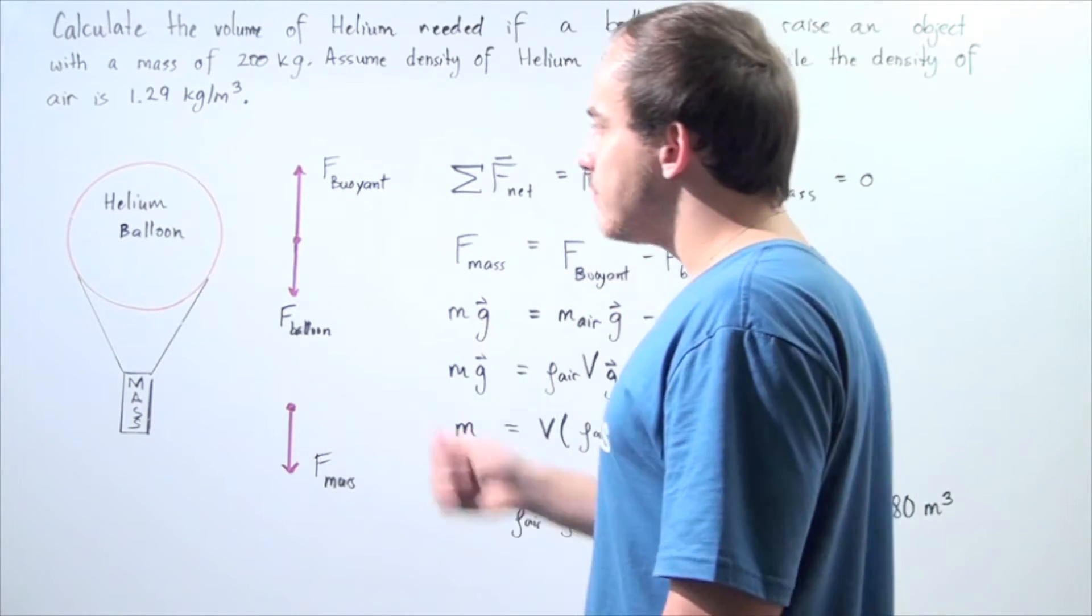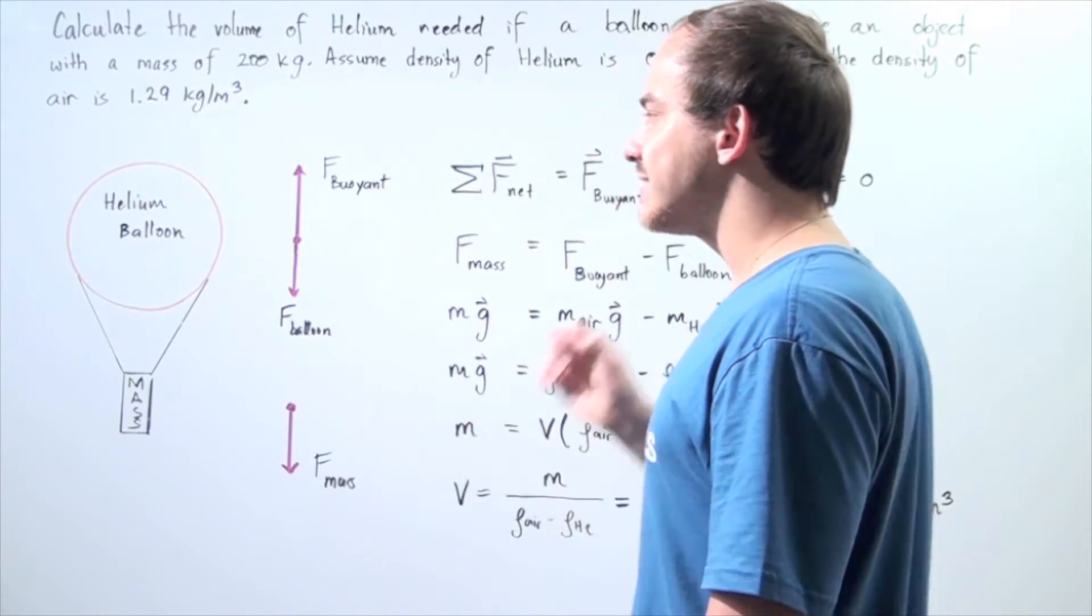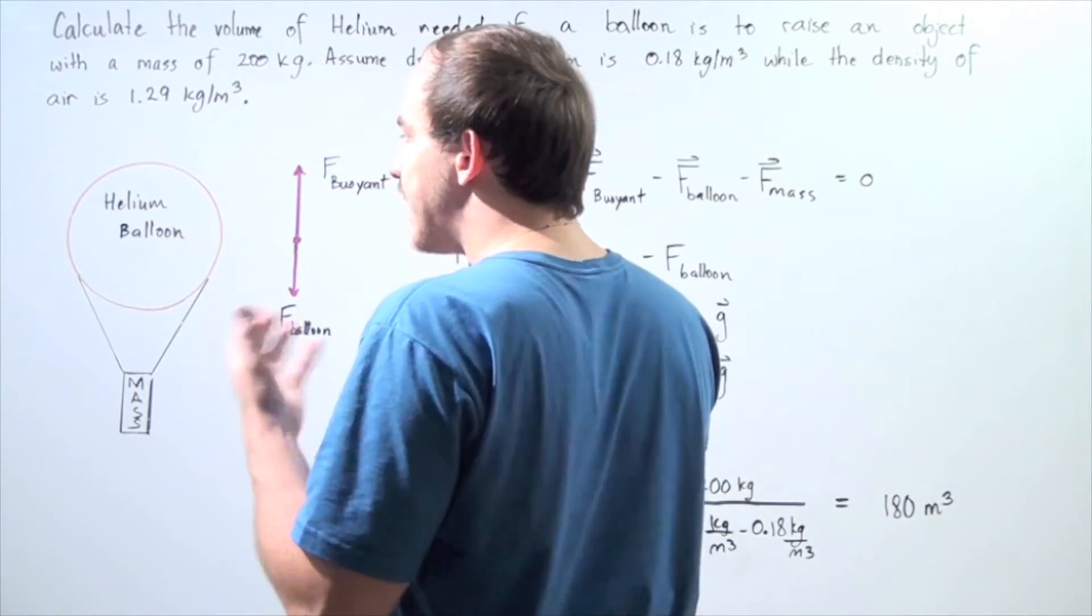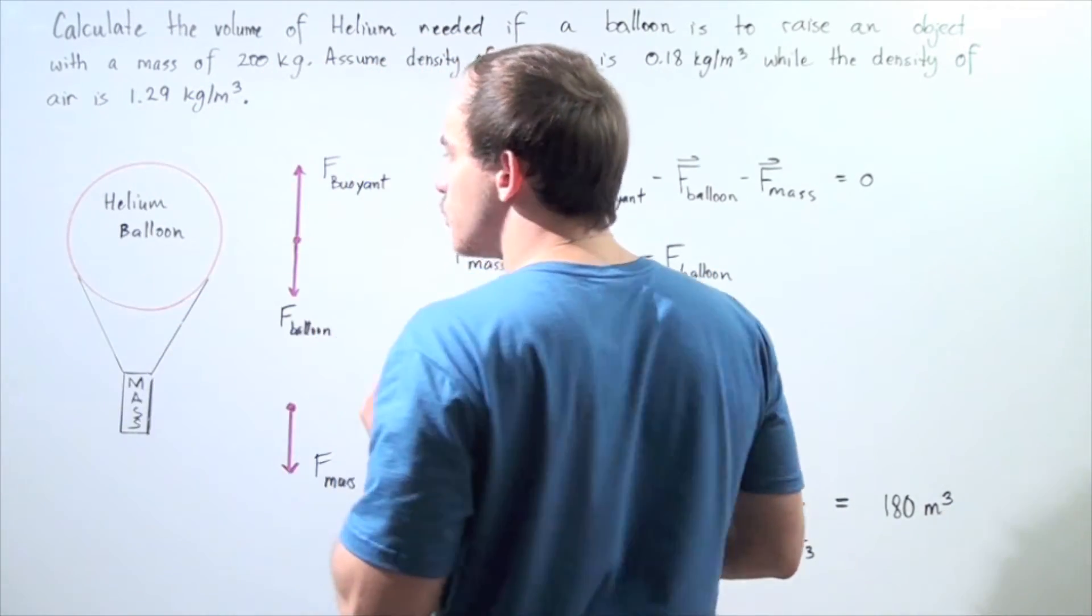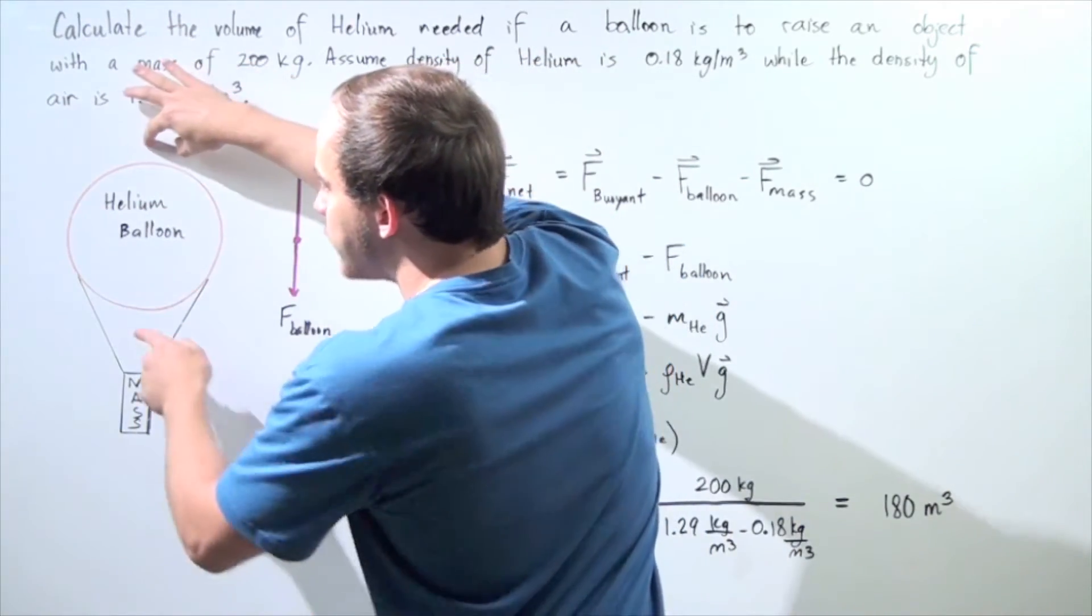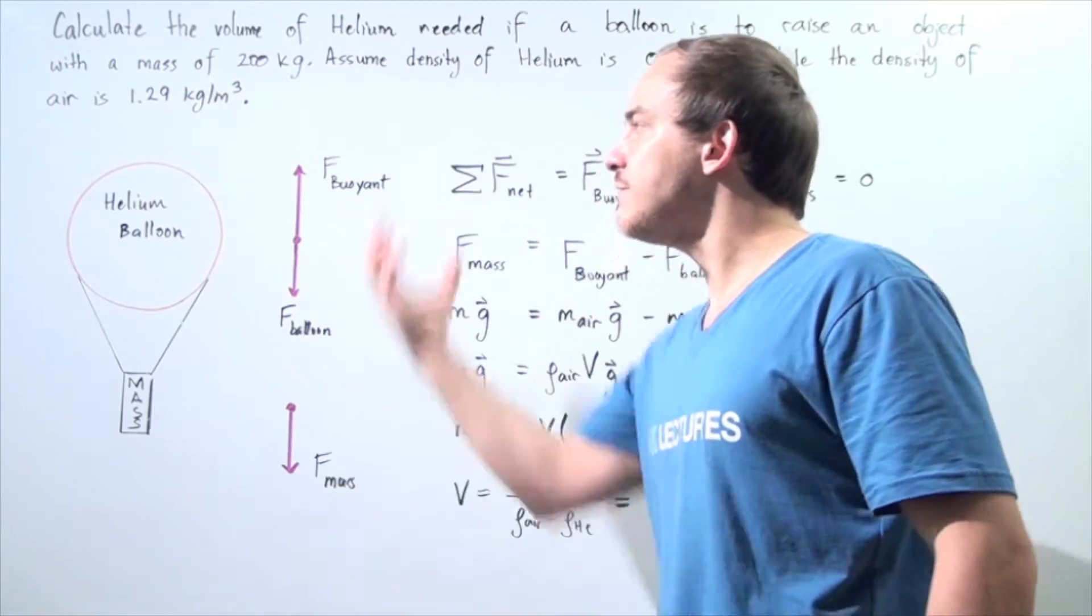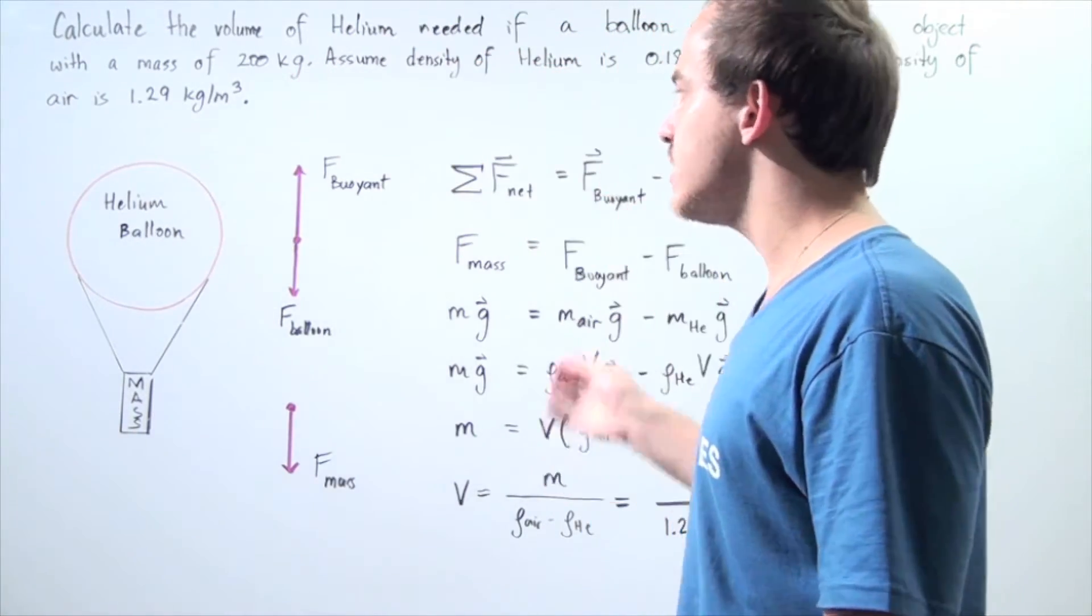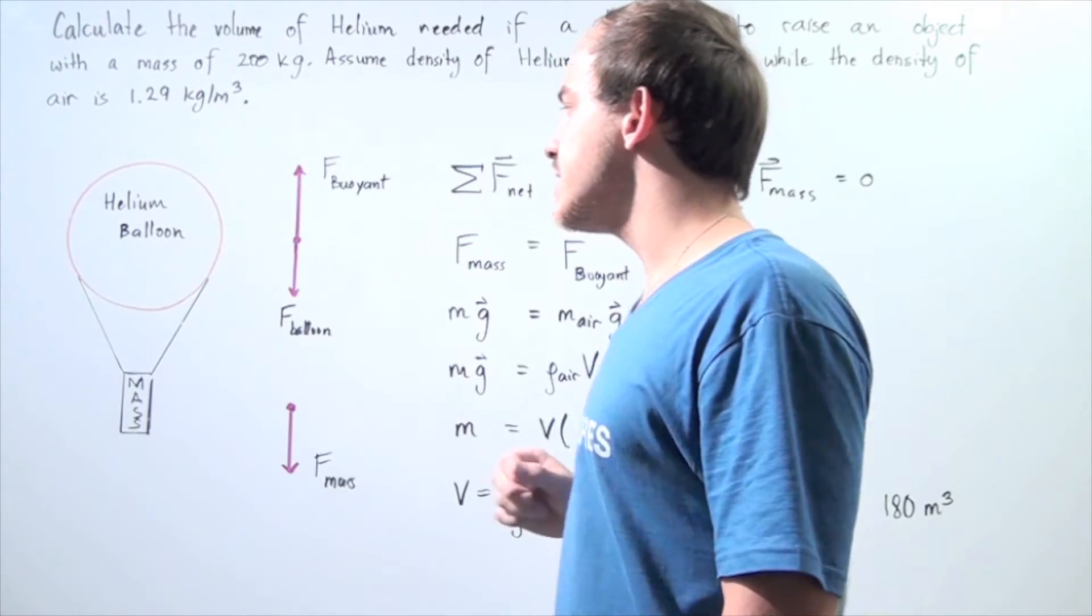So let's begin by examining our diagram and find all the forces acting on our objects. We have the helium balloon with helium molecules inside and air molecules outside. Because there is a difference in pressure between the top and the bottom of our balloon, the pressure due to the air molecules lifts our balloon. That force is known as the force of buoyancy or the buoyant force created by the air molecules acting on our balloon system.